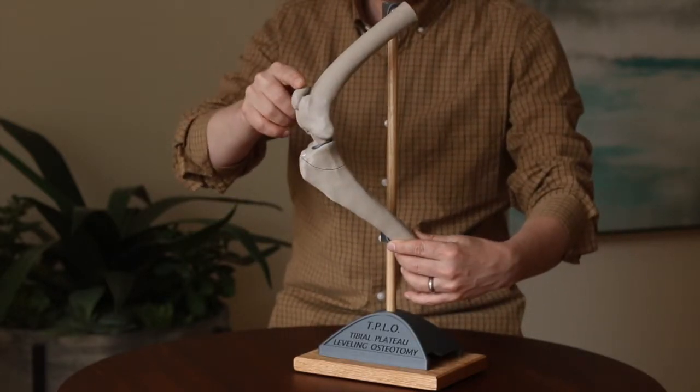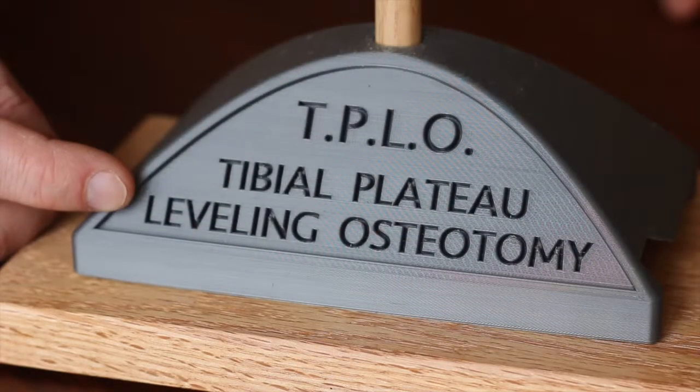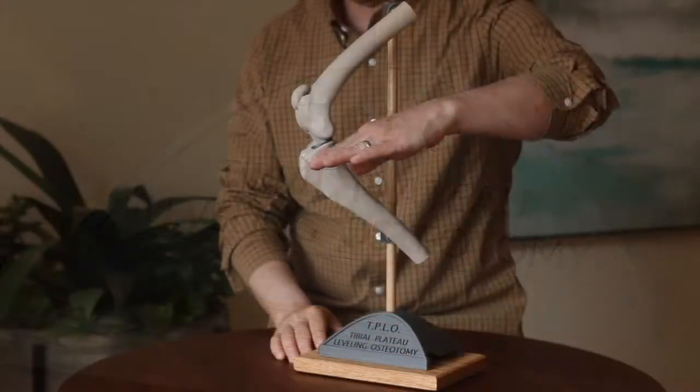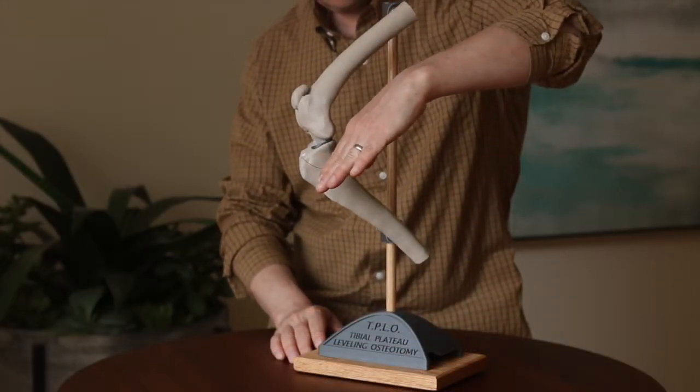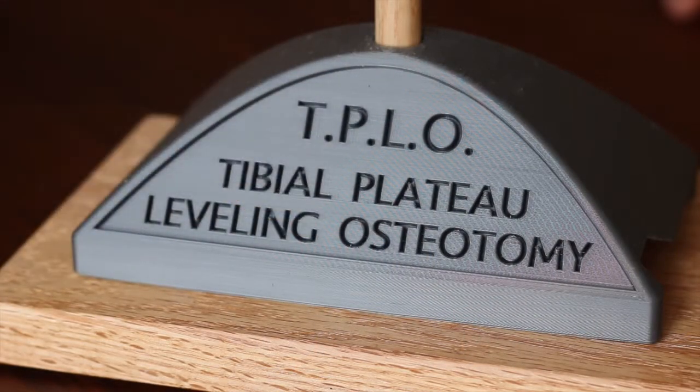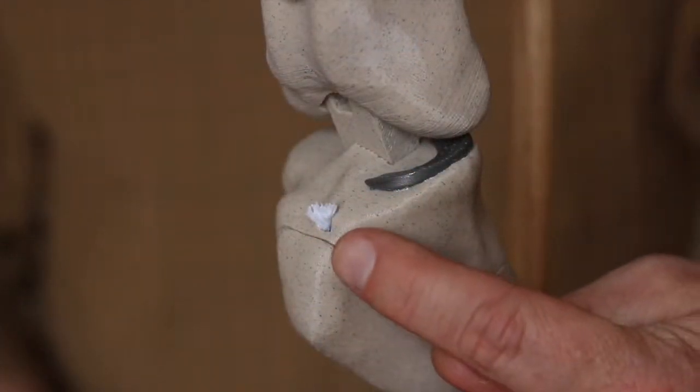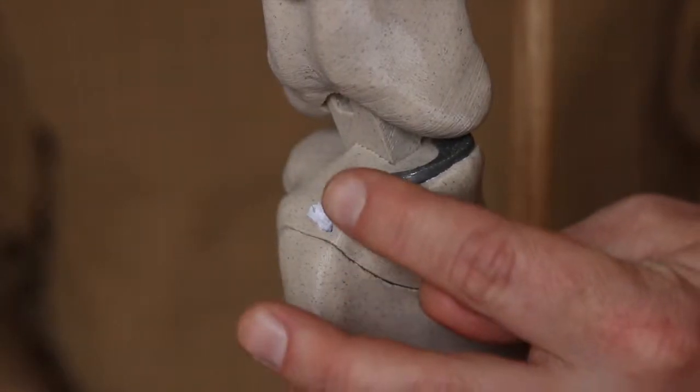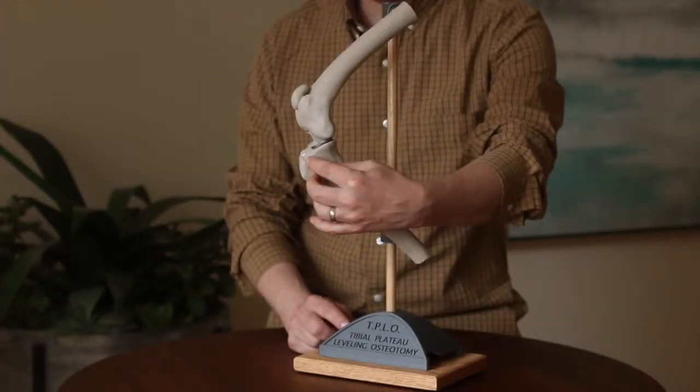So the goal of the surgery is to level that slope like so, so the femur does not tend to shift. And we do that by making an osteotomy, or a cut in bone, and that's this arc-shaped cut you can see right here. So in surgery we make that cut.